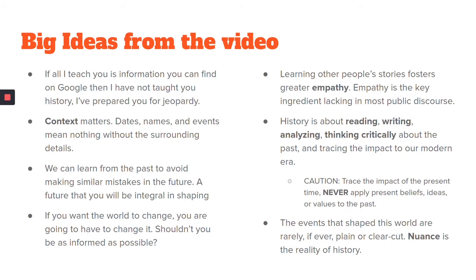The events that have shaped the world are rarely, if ever, plain or clear-cut — things are rarely black and white. There is what is called nuance, and nuance is the reality of history. It means things are rarely simple. There are usually multiple sides to every argument, multiple viewpoints to every event. To simply say something in history 'is bad' is not enough. We need to critically analyze it: why it's bad, who it's bad for, who benefits from it, who is suffering — or why it's good, who's benefiting, and who's not benefiting as much.